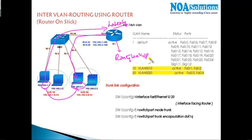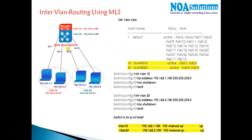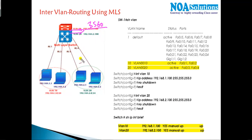Routers perform layer-3 routing lookups — they look at the destination network ID and forward packets based on the next hop. Switches, however, are much higher-speed devices compared to routers. This has led to the evolution of multi-layer switches, where a 3550 or 3560 switch can be used as a router as well.